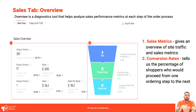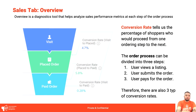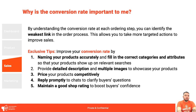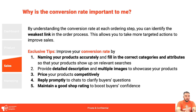Conversion rate shows the percentage of shoppers who proceed from one ordering step to the next — basically, how many buyers actually check out. The order process is divided into three steps: reviewing your listing, submitting an order after seeing your listing, and paying at checkout. There are three types of conversion rates you can analyze in Business Insights. Understanding conversion rate helps you identify the weakest link — maybe you need to name products accurately, write more detailed descriptions, address pricing issues, reply to buyers within 12 hours, or maintain a good shop rating.